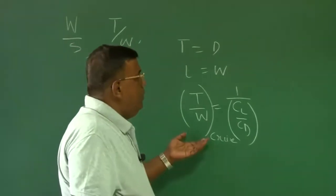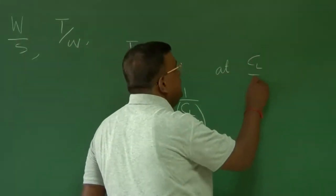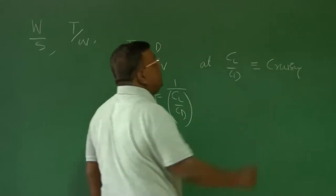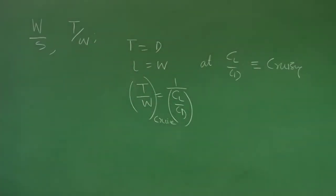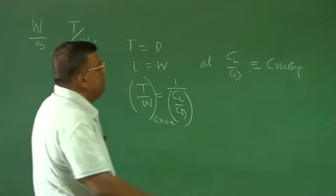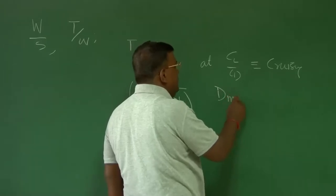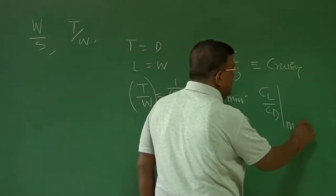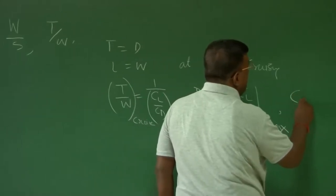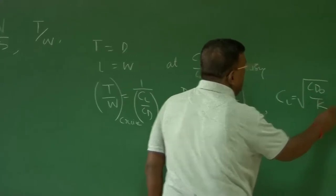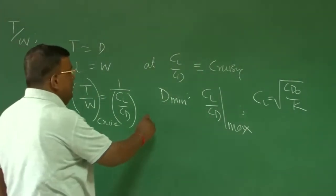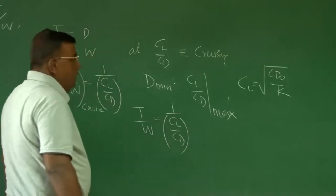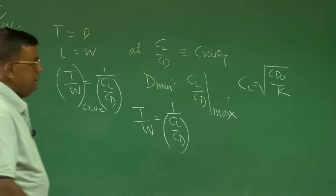To answer that, I need to know at what CL/CD I am cruising. For example, if I am cruising such that drag is minimum, then CL/CD has to be maximum. And that means CL has to equal sqrt(CD0/K). So immediately I know T/W equals 1/(CL/CD), and let us say CL/CD max has this value.